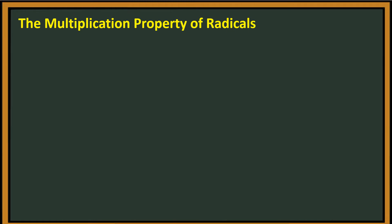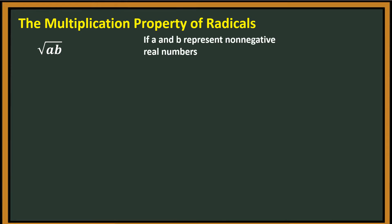The first one is the multiplication property of radicals. We have the square root of a times b, or square root of ab. If a and b represent non-negative real numbers, we can factor it as the square root of a times the square root of b.